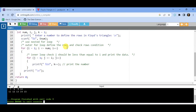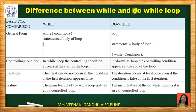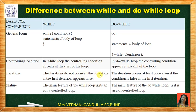Let us see the difference between while loop and do-while loop. The syntax of while loop: 'while(condition)' with statements inside the opening and closing brackets. In do-while loop it starts with 'do', then the body, followed by 'while(condition);' — with a semicolon, unlike the while loop. In while loop, the controlling condition appears at the start of the loop; in do-while loop, it appears at the end. In while loop, iteration does not occur if the condition is false from the start. In do-while loop, iteration occurs at least once even if the condition is false. The main feature of while loop: it is an entry control or top-tested loop. The main feature of do-while loop: it is an exit control or bottom-tested loop.